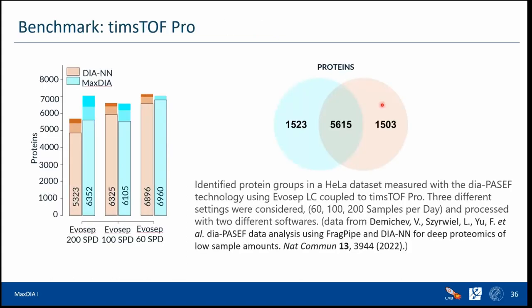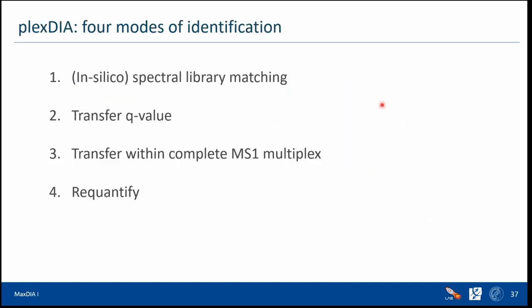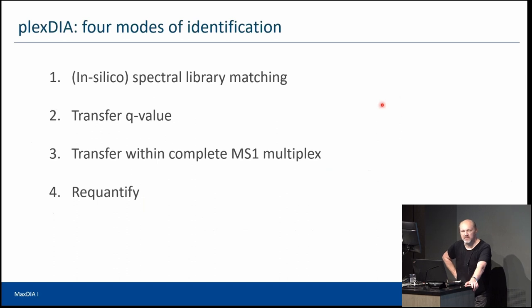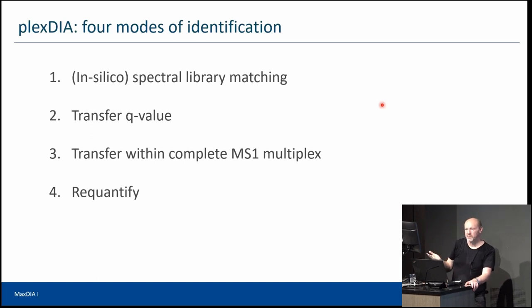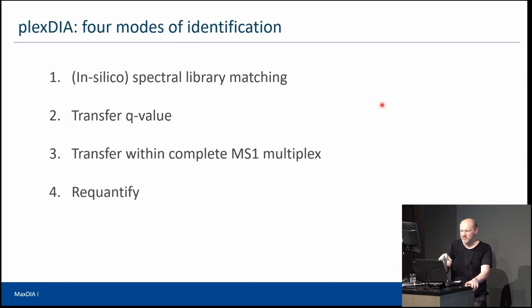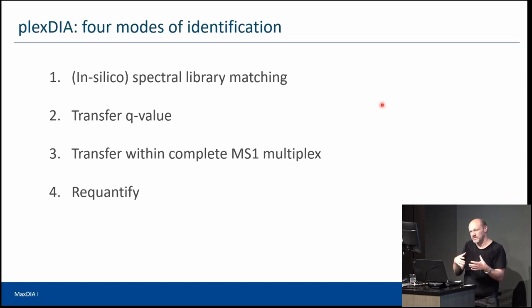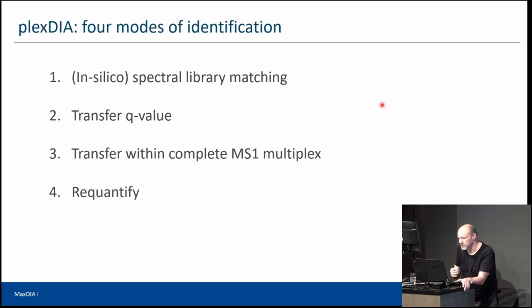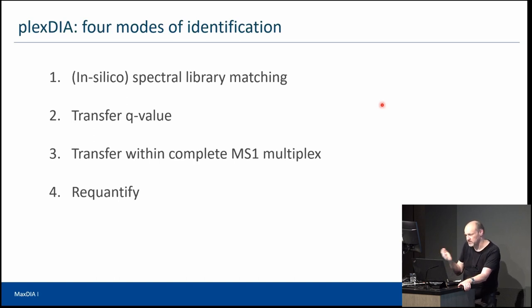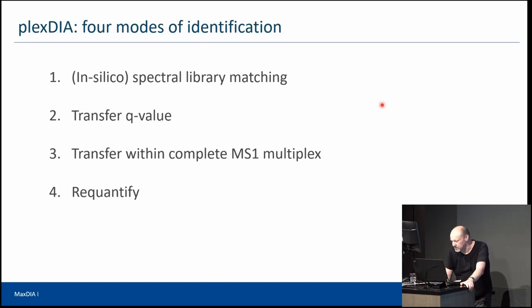Now let's look at how PLEX-DIA in MaxQuant works. It means using MS1-level labeling together with DIA — multiplexing so that instead of one sample per LC-MS run, you measure multiple samples in one run. For example, SILAC triplets — medium, heavy, light — in one DIA sample. You could also use a carrier channel. Different labeling options are supported: SILAC, MTRAQ, dimethyl, or any other MS1-level labeling.